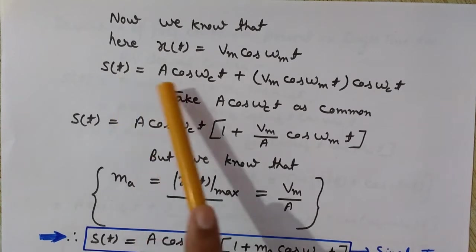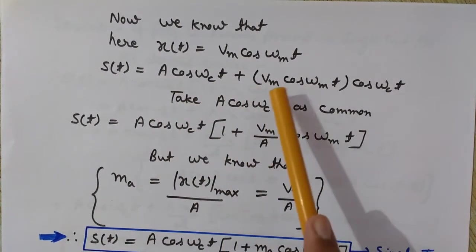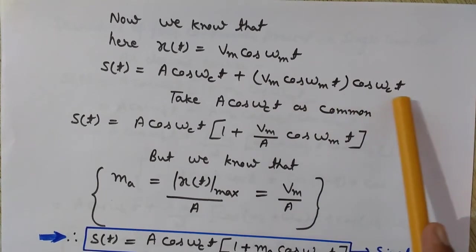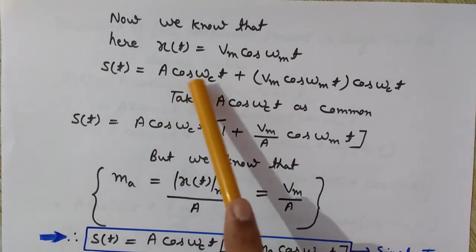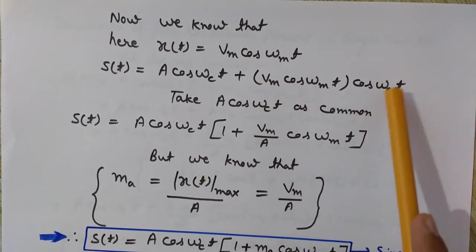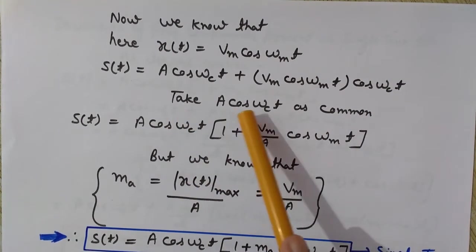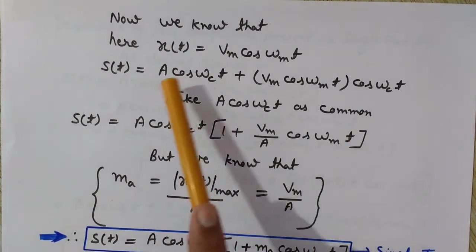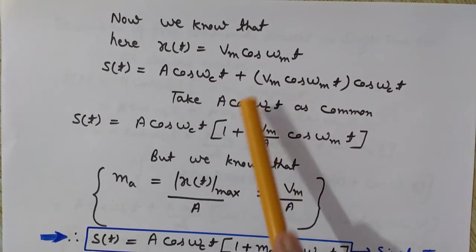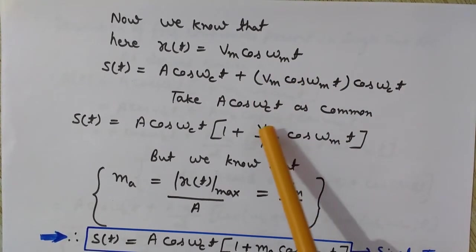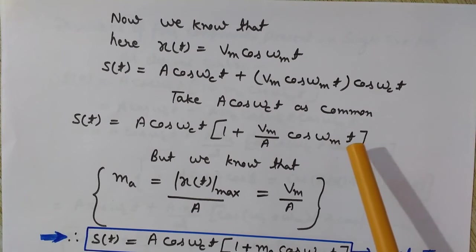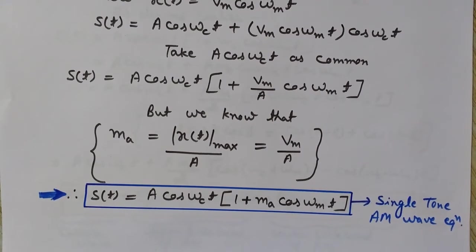After substitution the equation of the modulated signal becomes s(t) = A·cos(ωc·t) + Vm·cos(ωm·t)·cos(ωc·t). Taking A·cos(ωc·t) as common, it remains 1 inside, and from the second term we get Vm/A·cos(ωm·t). So s(t) = A·cos(ωc·t)·[1 + (Vm/A)·cos(ωm·t)].